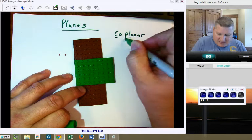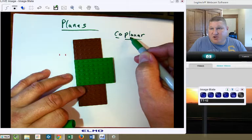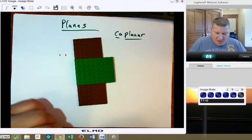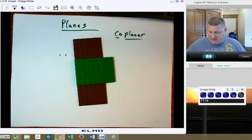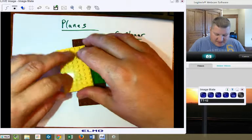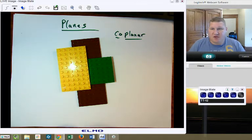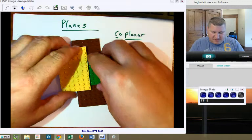Just like with co-linear, co-linear meant on the same line. Co-planar means on the same or with the same plane. Okay, so I have two planes on the same plane. If I take another plane and I lock it in again, that's also now co-planar because they are all on the same plane.